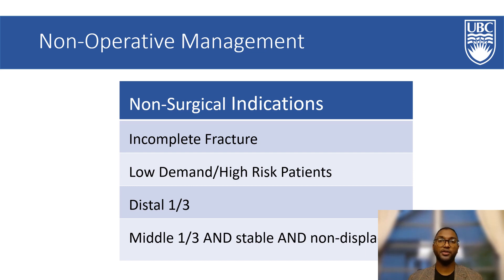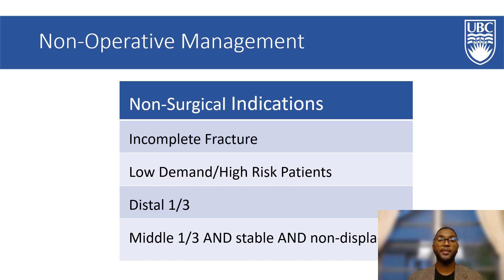Indications for non-operative management include an incomplete fracture, a fracture in the distal third of the scaphoid which is generally stable and has good blood supply, a fracture in the middle third of the scaphoid if it is non-displaced — i.e. less than one millimeter of displacement — and stable, meaning no angulation and a normal carpal alignment, or a patient who is low demand or high risk in which they are too sick and cannot tolerate an operating room procedure.